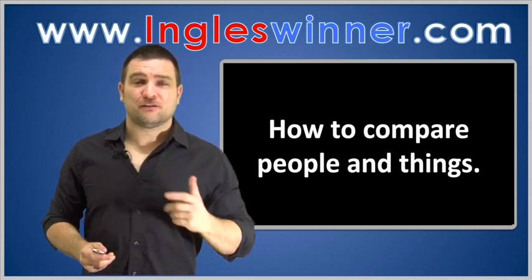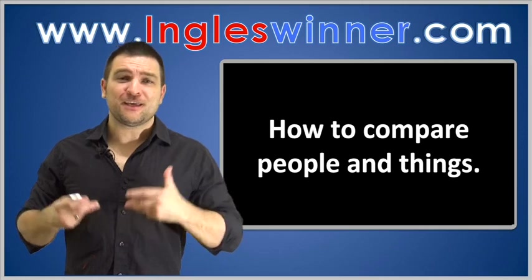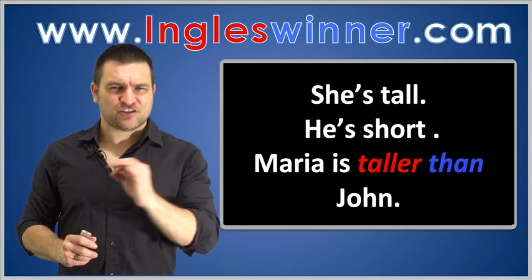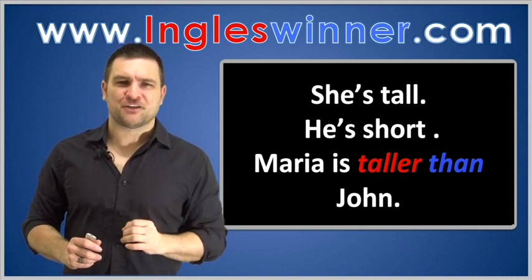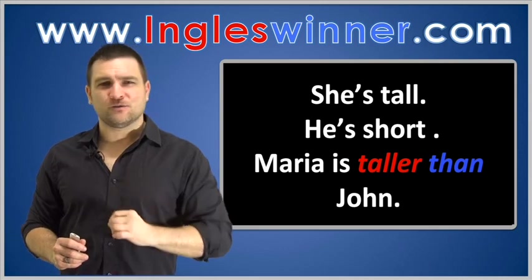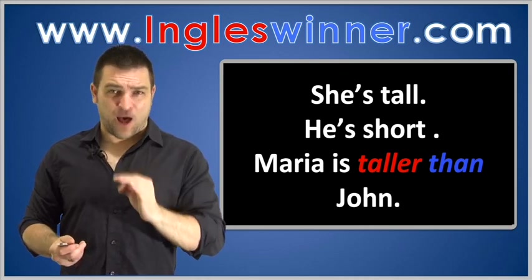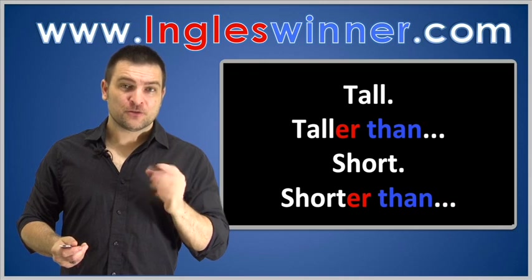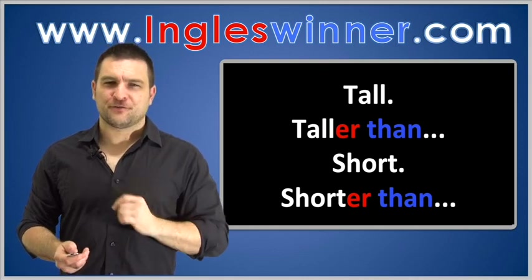Hello everyone and welcome back. In this class you will learn — você vai aprender — how to compare people and things — como comparar pessoas e coisas. So let's get started — então vamos começar. She's tall — ela é alta. He's short — ele é baixo. Maria is taller than John — a Maria é mais alta do que o John. So: alto → tall; mais alto do que → taller than; baixo → short; mais baixo do que → shorter than.